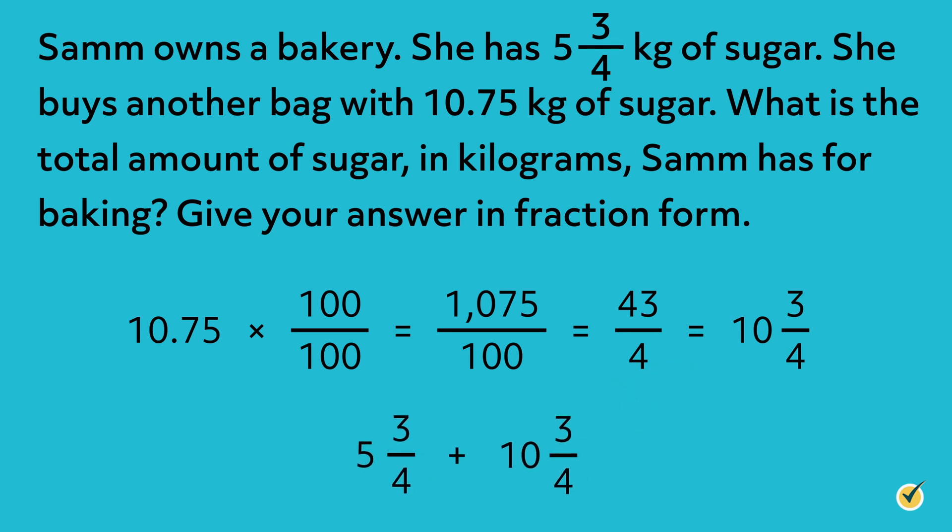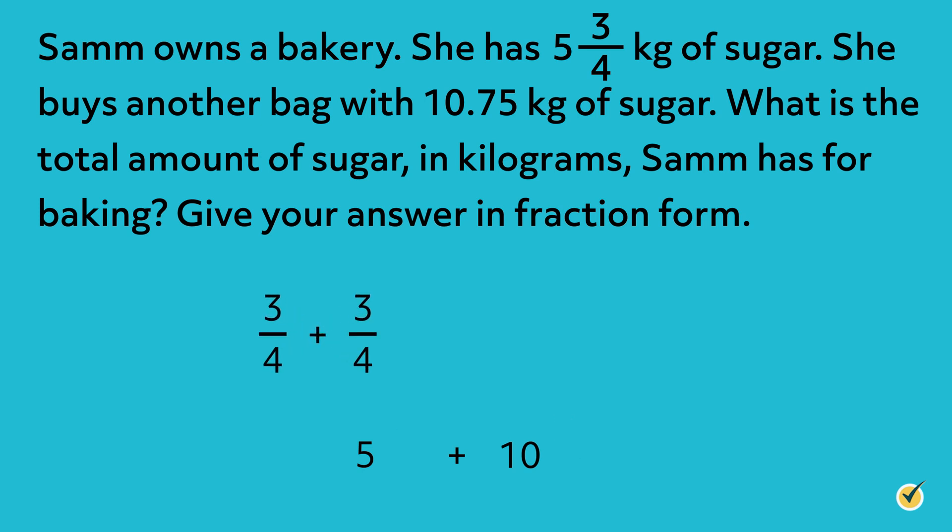Now that both numbers are in mixed number form, we can easily combine to find the total amount of sugar that Sam has for her baking. So we're going to add 5 and 3 fourths plus 10 and 3 fourths. When we add mixed numbers, we start by adding the fractional parts. So let's do 3 fourths plus 3 fourths.